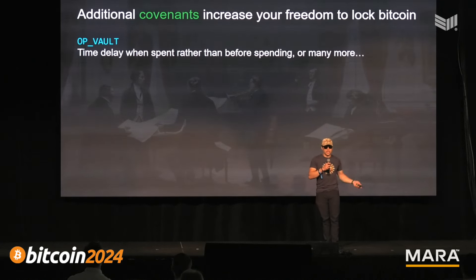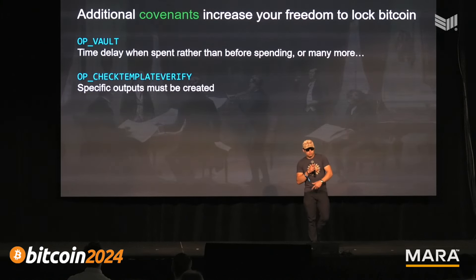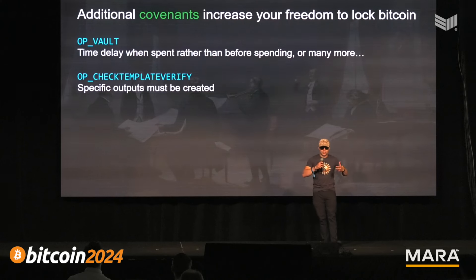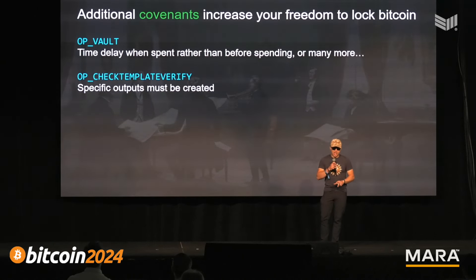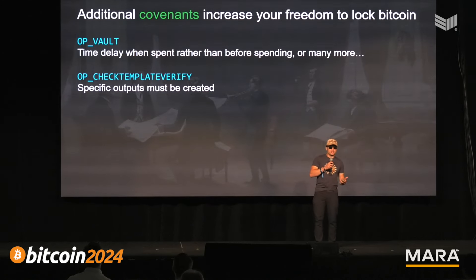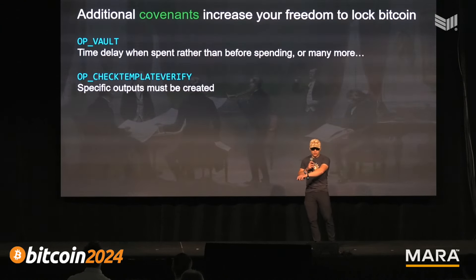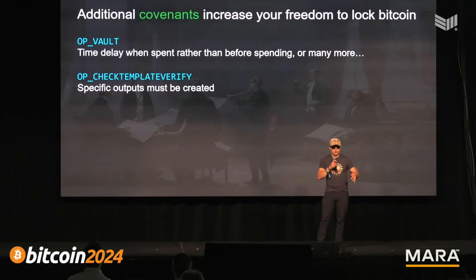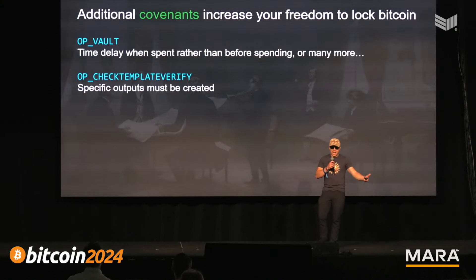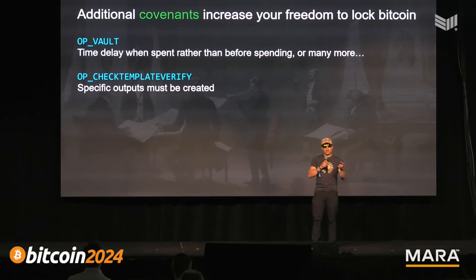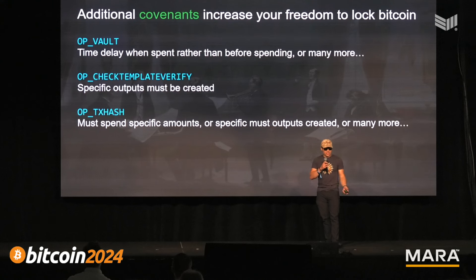Check template verify is one of the simpler covenant proposals out there. Basically all it can do is specify that the next time this Bitcoin is spent through this script path, specific outputs have to be created in that spending. For example, you could say: if I don't spend these Bitcoin within the next 10 years, a timelock is satisfied, and then with no keys they can be sent to Coinbase — let's say Coinbase has my will and they'll distribute the funds to my heirs. You can have delays that then specify the destination after the delay.